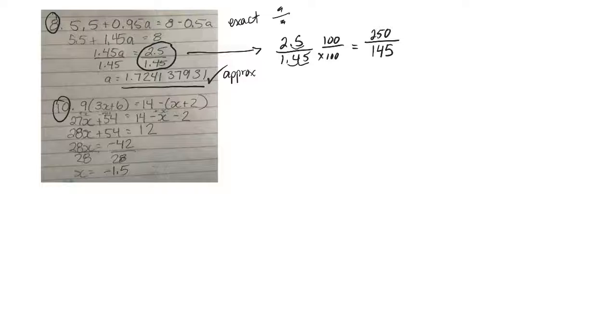Now I've just got normal numbers. Now I could simplify it. So I can divide the top by, say, 5 and divide the bottom by 5. Well, that'd give me 50. And then this one will be 29. And I don't think you can simplify any further.